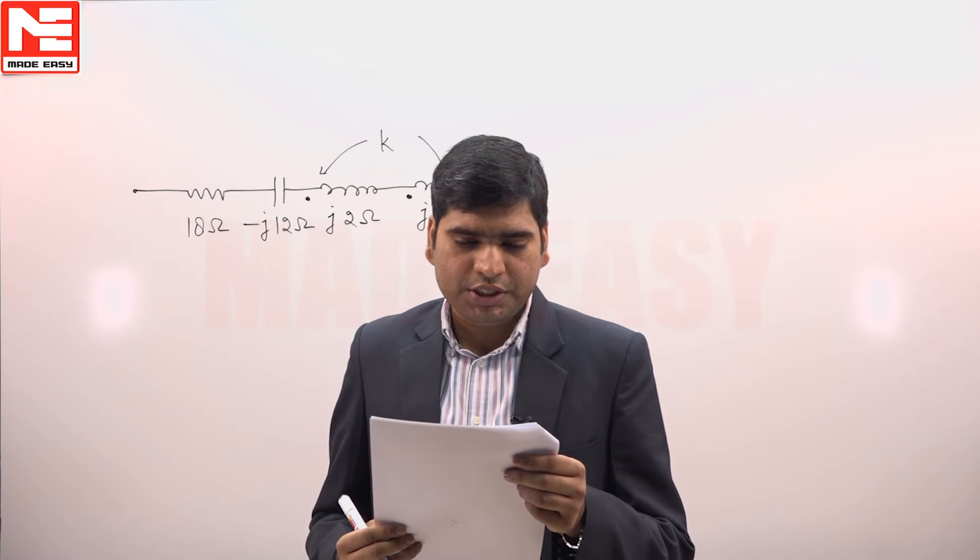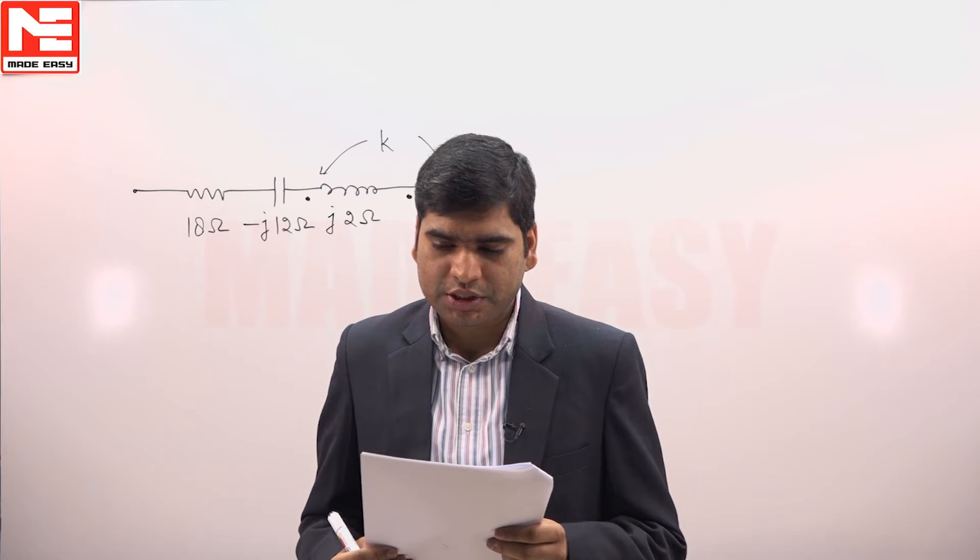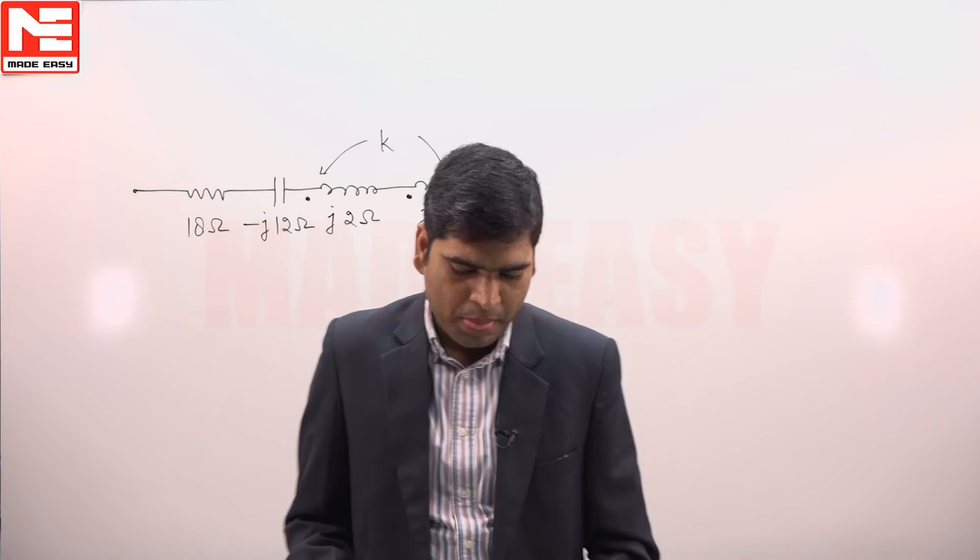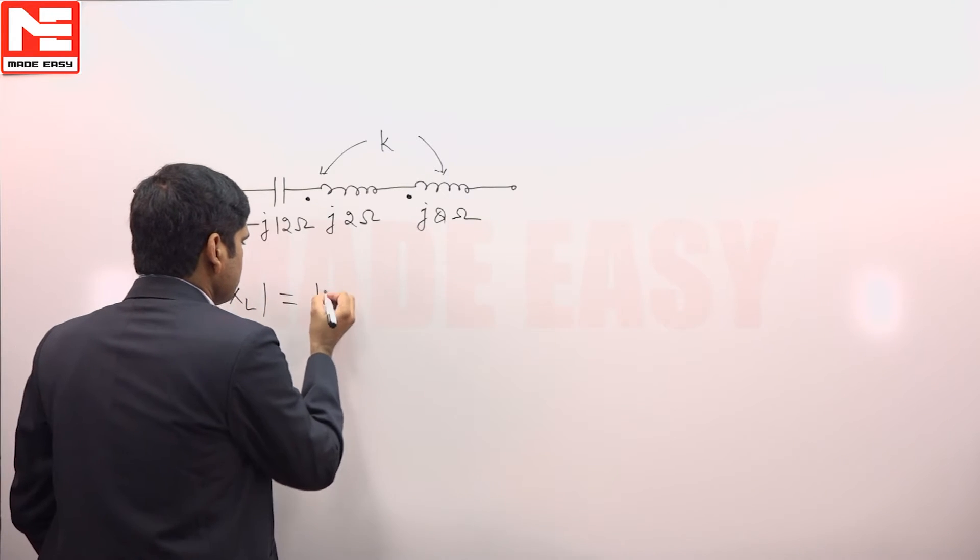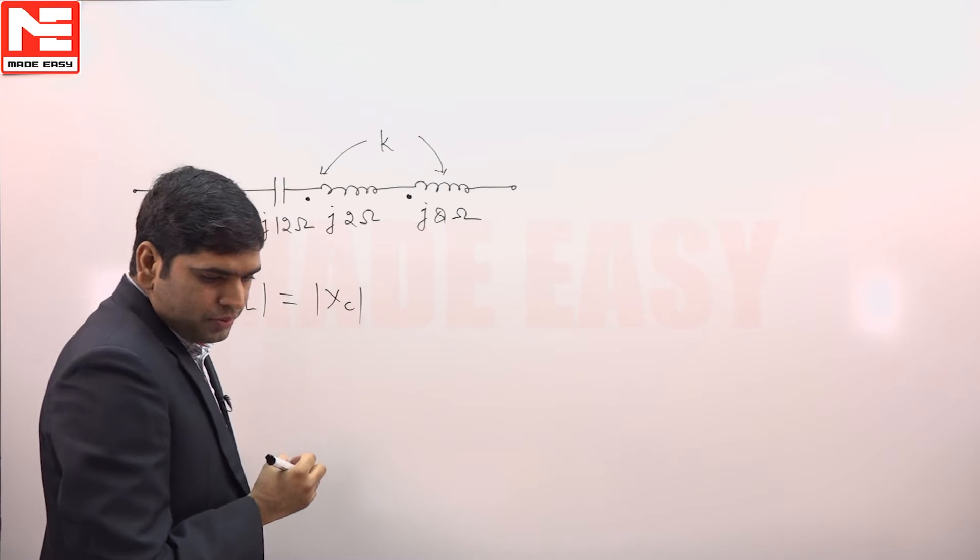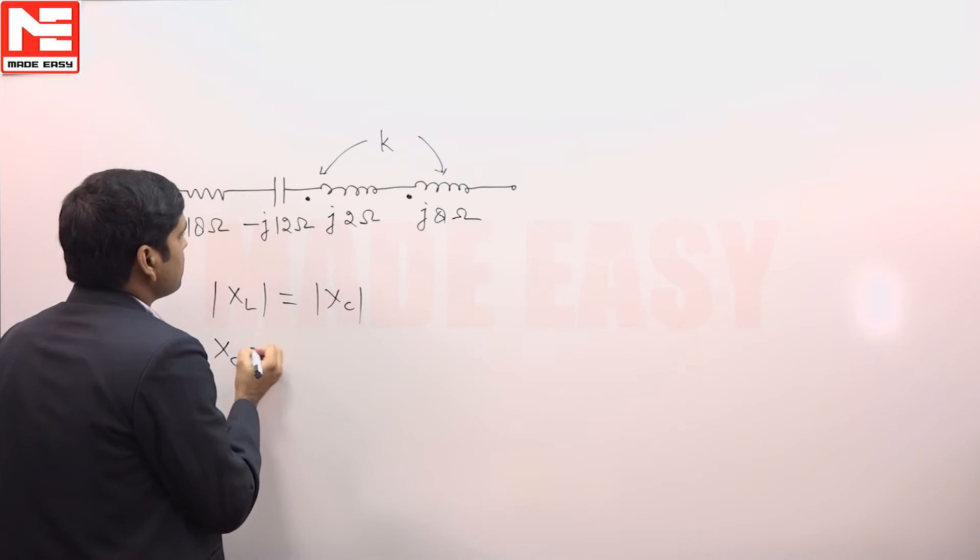In this question, consider the following series resonant circuit. For series resonance, the value of coupling coefficient - as we know that for series resonance, magnitude of XL must be equal to magnitude of XC. So we have XC here.